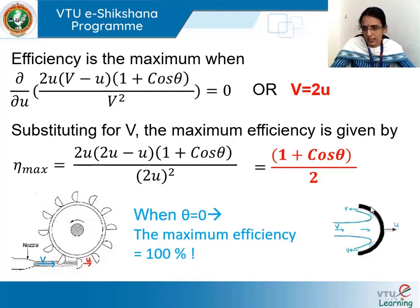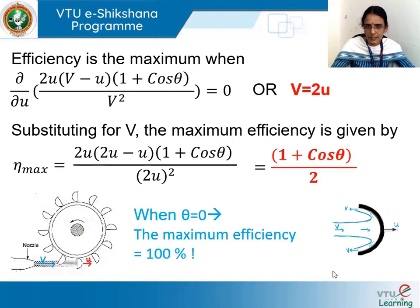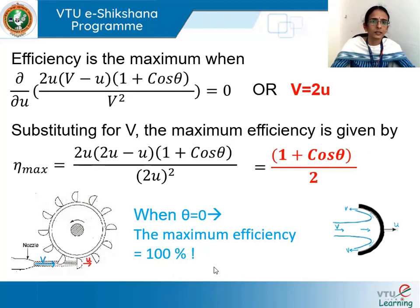Theoretically, the maximum efficiency of 100% is attained for a hemispherical vane (θ = 0°) when u = v/2. However, a hemispherical vane is not practical. For practical applications, θ is kept as close to 0° as possible — generally between 0° and 15° — so that efficiency remains near its maximum value.